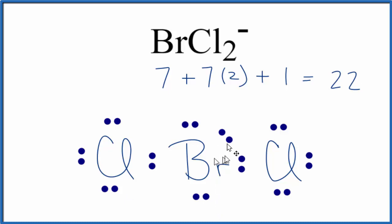But how do we know that we put the extra electron pair on the Bromine and not the Chlorine? To figure that out, we calculate the formal charges. If we calculate the formal charges here, with the extra pair of electrons here on the Bromine, we get a minus 1 on the Bromine, and then these Chlorines, they have formal charges of 0.